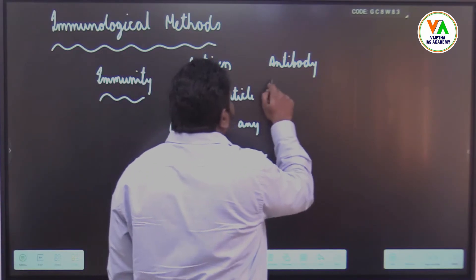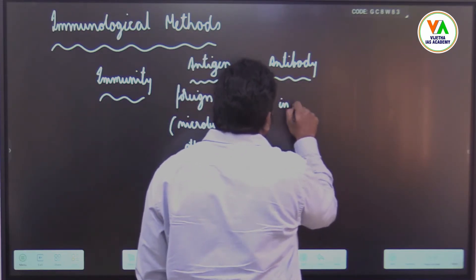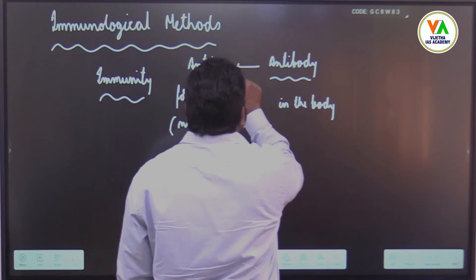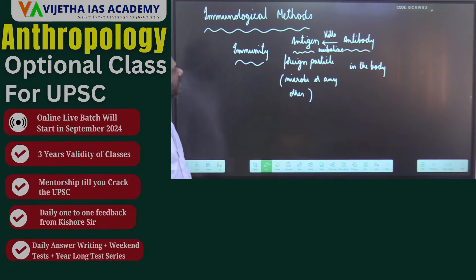For every antigen, there is an antibody which is formed inside. Antibody kills or neutralizes the antigen, and there is antigen-antibody specificity.